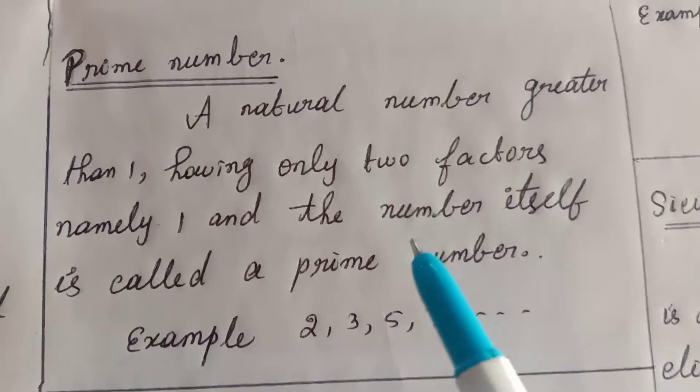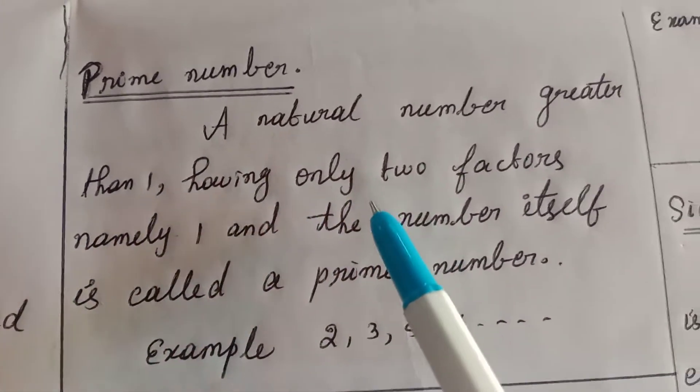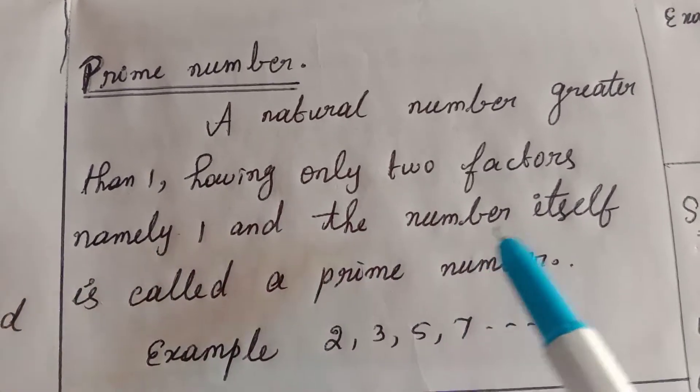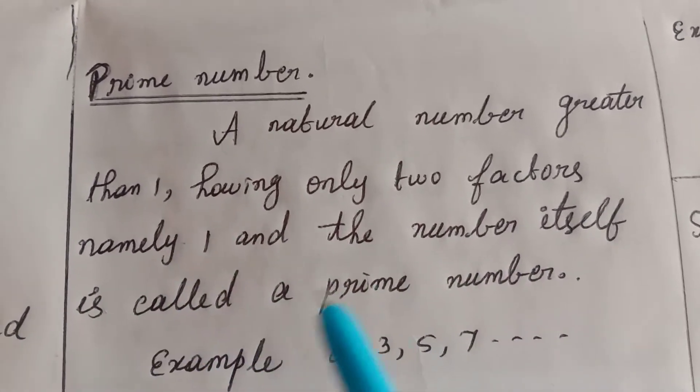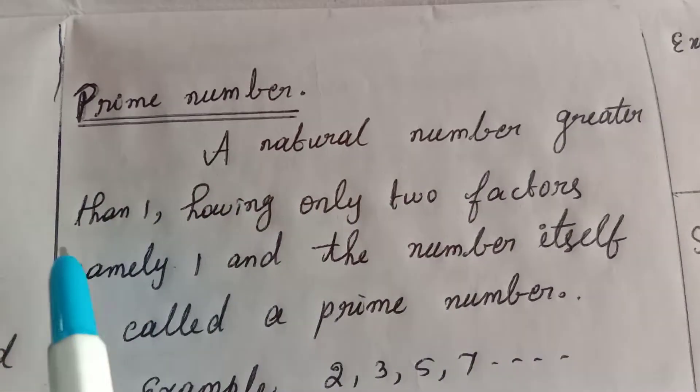Next, prime number. A natural number greater than 1 having only 2 factors, namely 1 and the number itself, is called a prime number.